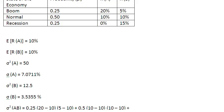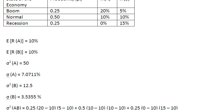I write the last probability, 0.25. Inside the bracket, for asset A I write the actual return of 0% and subtract the expected return of 10%. In another bracket I write the actual return for asset B, which is 15%, and subtract the expected return of asset B, which is 10%. That completes the covariance formula with all numbers substituted in.